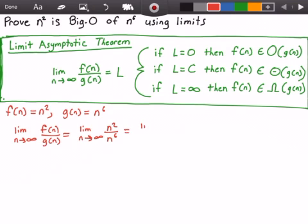Now this can be reduced to the limit as n approaches infinity of, let's see here, we can do n divided by n to the fifth. We'll just do that for now, and this can be reduced even further. So we take the limit as n approaches infinity of 1 over n to the power of 4.